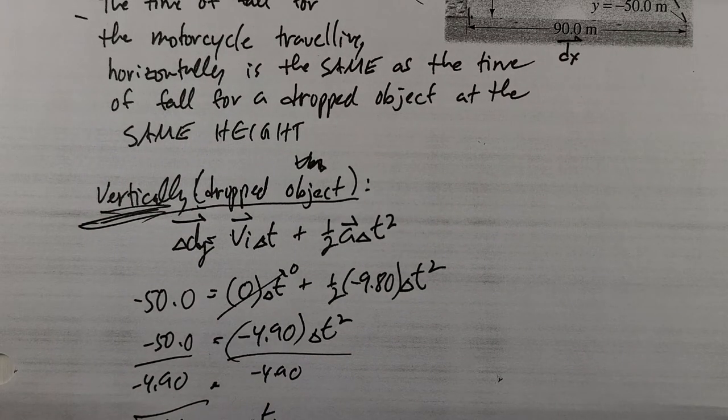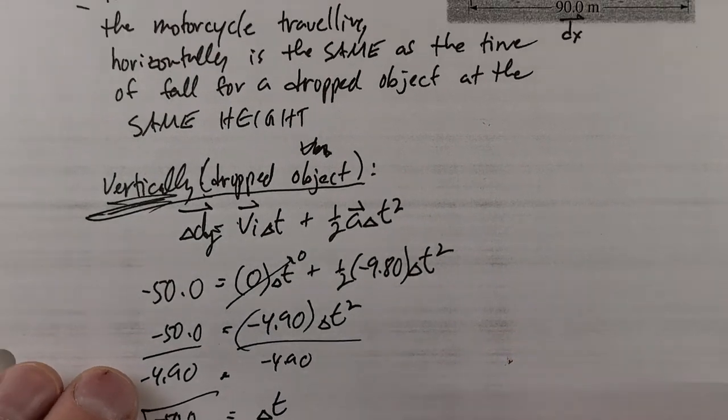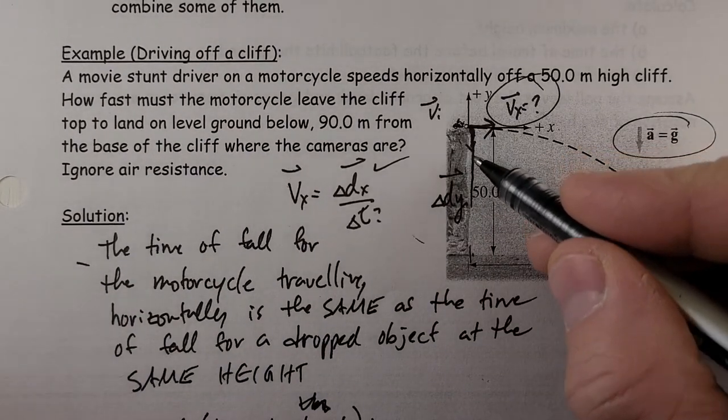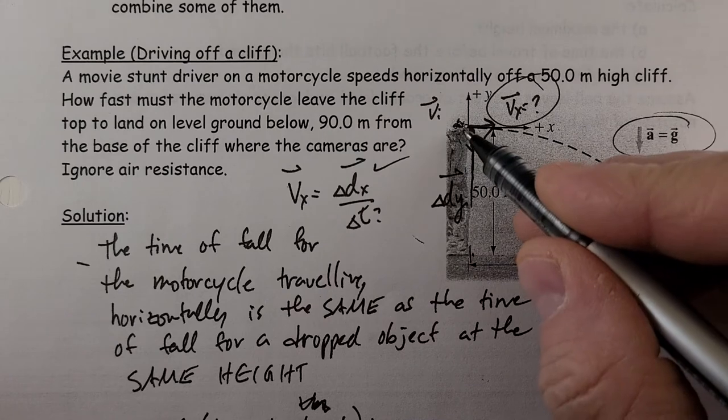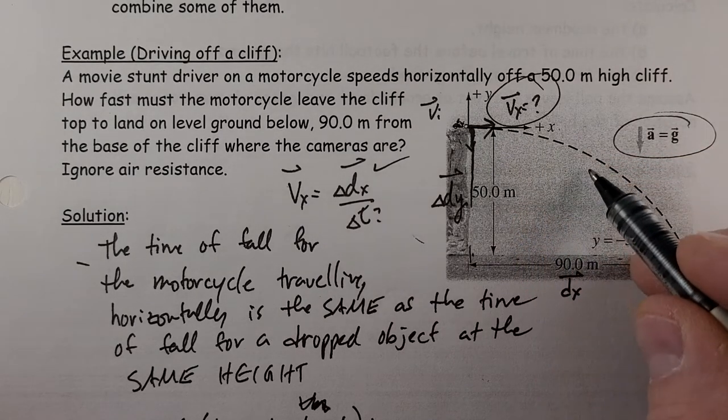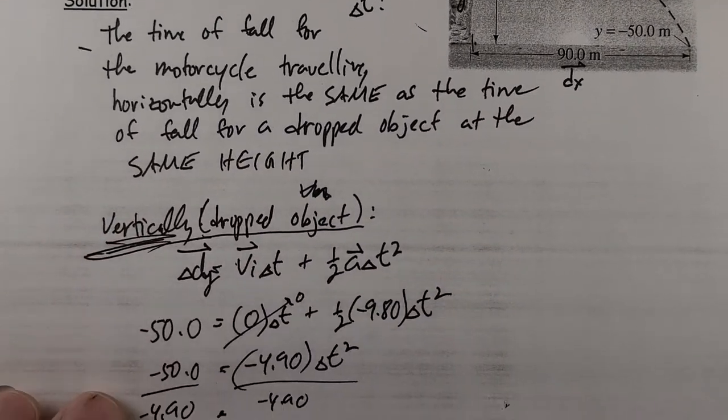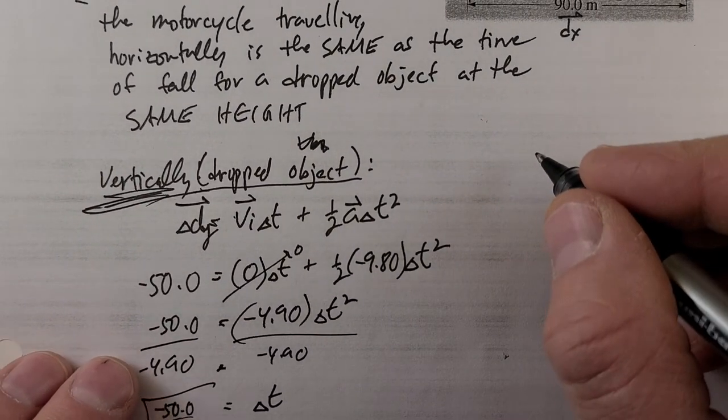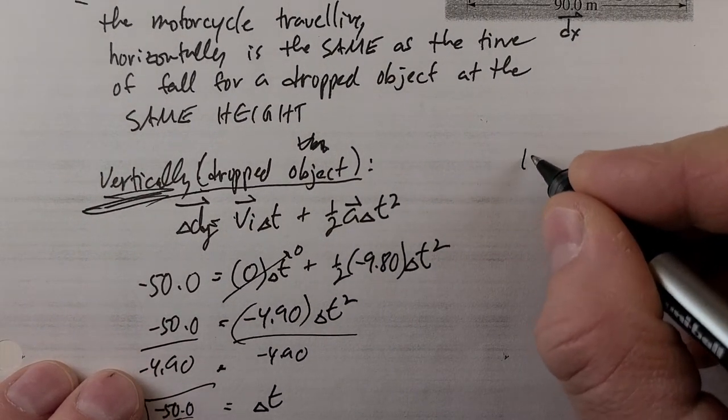So if I drop an object, it falls in 3.19 seconds. If the motorcycle is going horizontally for 3.19 seconds, it's the same. So now to figure out horizontally...